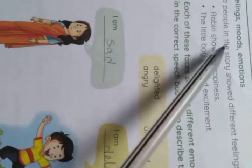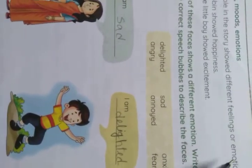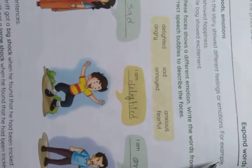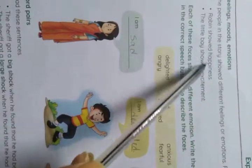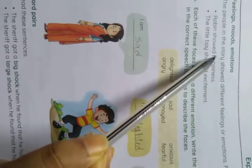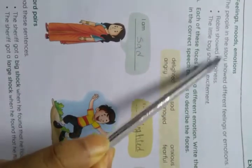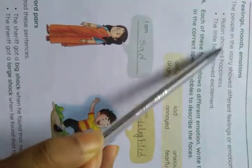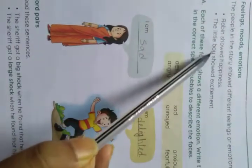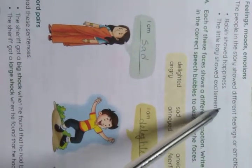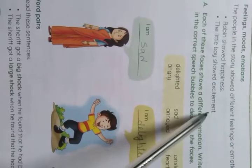The people in the story show different feelings or emotions. For example, Robin showed happiness — happiness is a feeling. The little boy showed excitement, which is also a feeling.